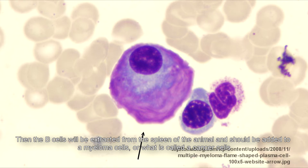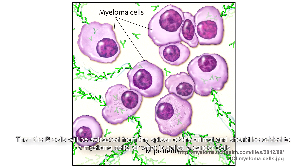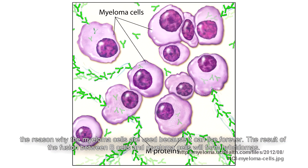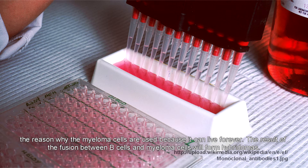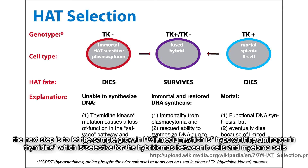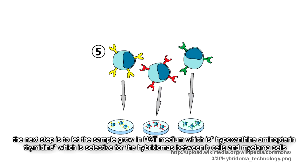The B cells should be added to myeloma cells, also called cancer cells. The reason myeloma cells are used is because they can live forever. The result of the fusion between B cells and myeloma cells will form a hybridoma. The next step is to let the sample grow in HAT medium, which is hypoxanthine-aminopterin-thymidine, which is selective for the hybridoma.